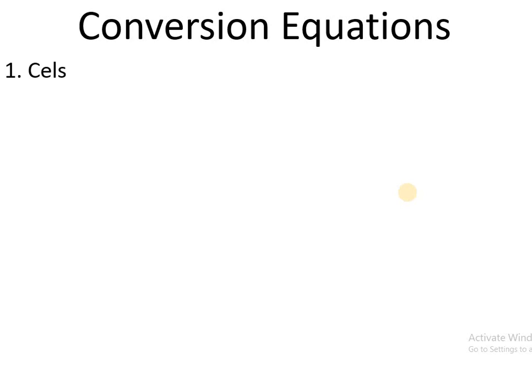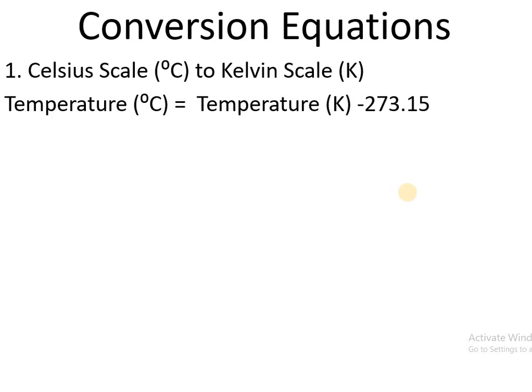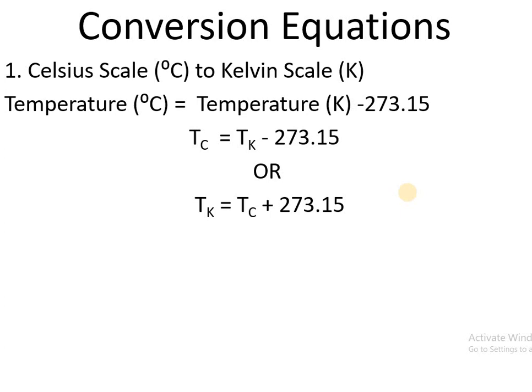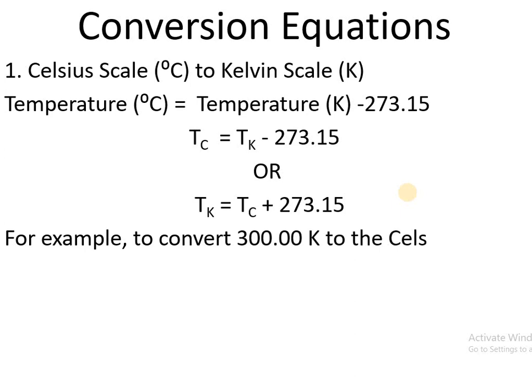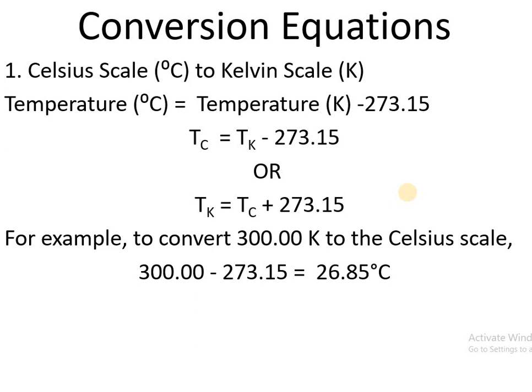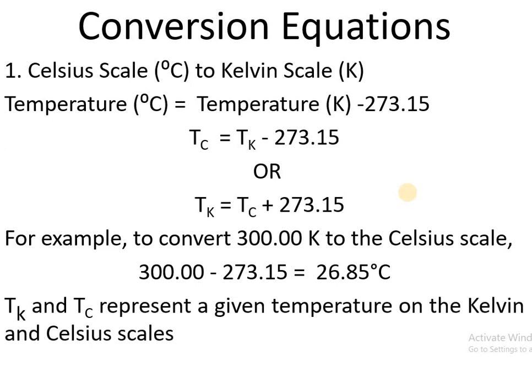Now let's see the first conversion equation to convert Celsius scale to Kelvin scale. We use the equation: temperature in degree Celsius equals temperature in Kelvin minus 273.15, or Tc = Tk − 273.15. Equivalently, Tk = Tc + 273.15. For example, to convert 300 Kelvin to Celsius: 300 minus 273.15 equals 26.85 degree Celsius. Here Tk and Tc represent a given temperature on the Kelvin and Celsius scales.